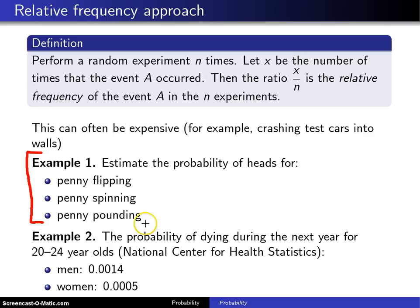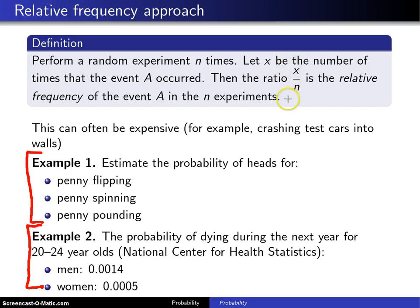Incidentally, the U.S. government changed the composition of pennies around 1981 or 1982 — previously they were all copper, and after that date they were made of a copper alloy — so it is quite possible you would get different results on an earlier versus a later penny. Here is another example of using relative frequency: the National Center for Health Statistics found that the probability of dying in the next year for 20- to 24-year-olds is 0.0014 for men and 0.0005 for women. Men are at about triple the risk, and these numbers come from a dataset where they took N individuals in this age range and X was the number that died.